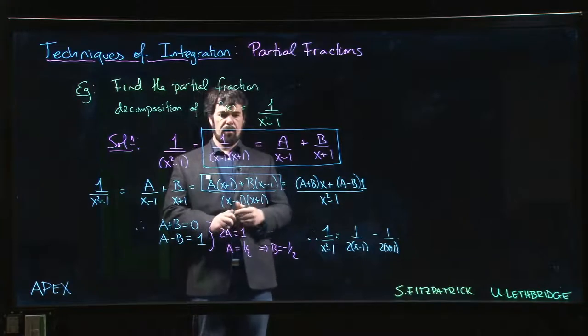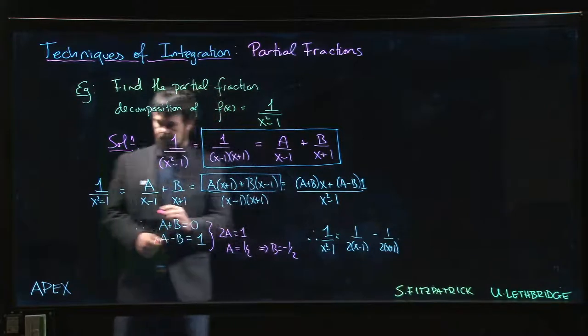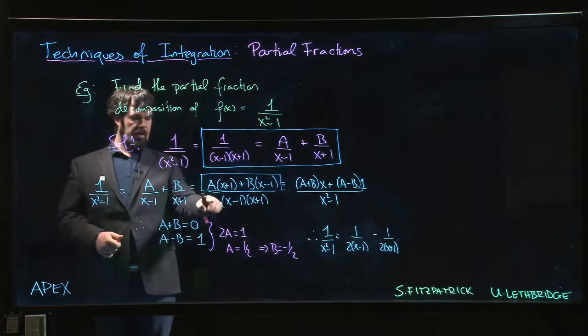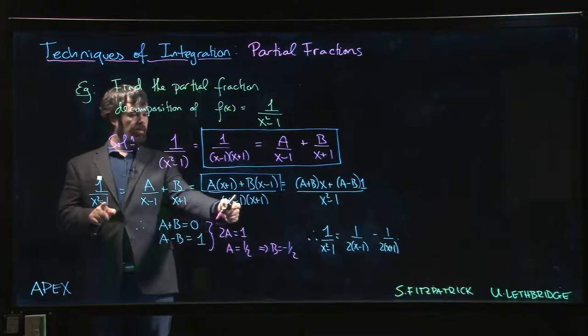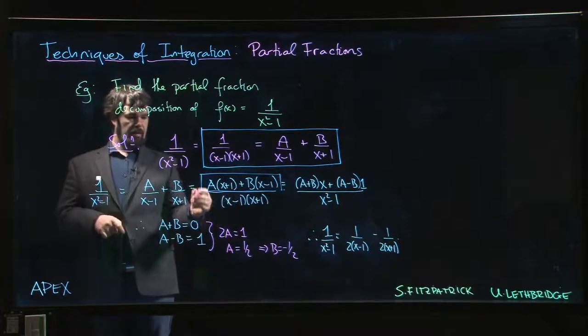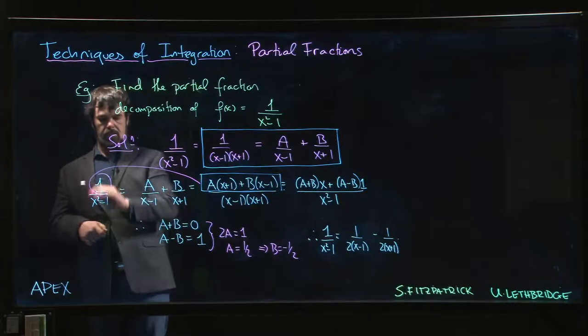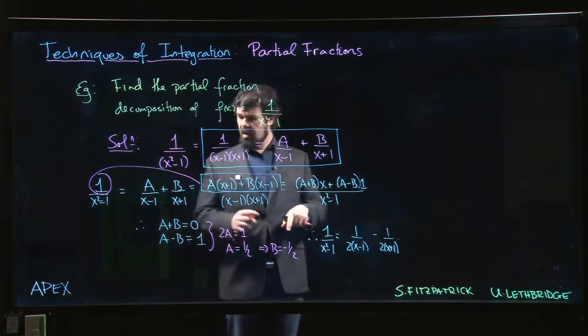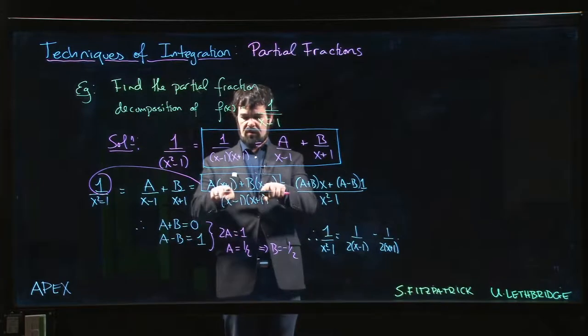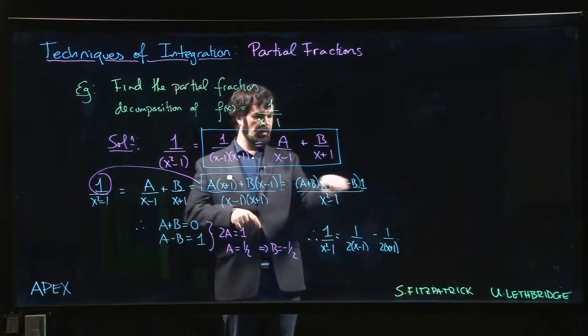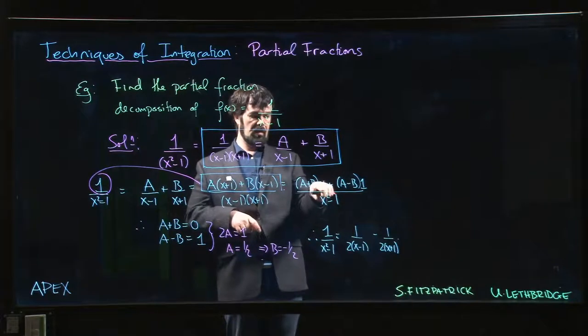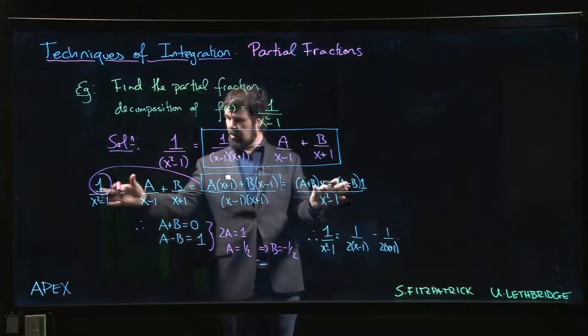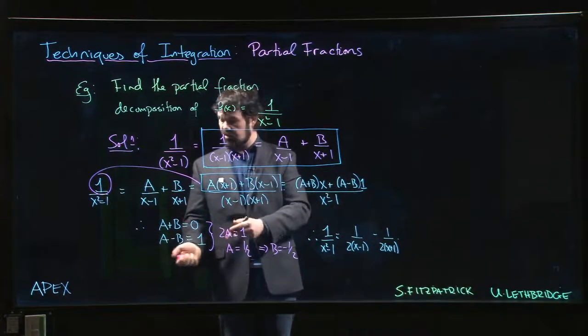There are two approaches you can take. One is to realize that if we compare here to here, the denominators are the same—this is just a factored version of that—and so the numerators at this stage must be equal. The point is we want to keep things in terms of A and B with these factors rather than trying to group in terms of powers of x. What we did here was compare polynomials, equate coefficients, get our system, and solve.